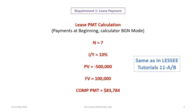As in the lessee tutorials 11A and 11B, we put N for the number of payments. Remember to put your calculator into begin mode because in this example the lease payments are due at the beginning of the period. The lessor's implicit rate of interest is 10%, so 10 I/Y. The present value of the equipment being leased is $500,000, entered as a negative number otherwise the calculator will error out. The future value is $100,000 — we include the residual whether or not it's guaranteed. The payment is therefore $83,784.